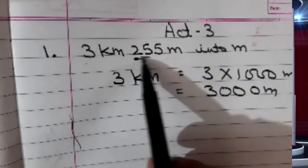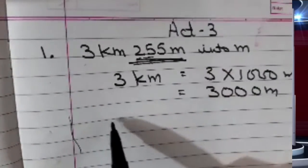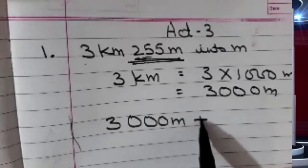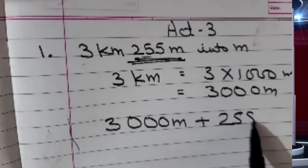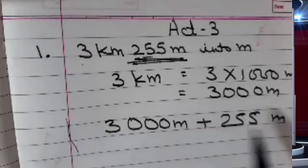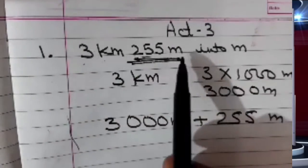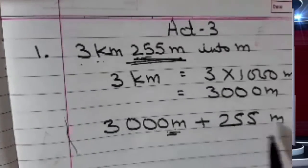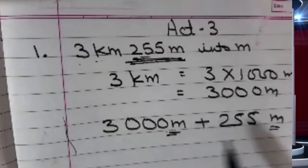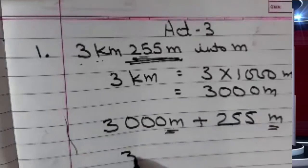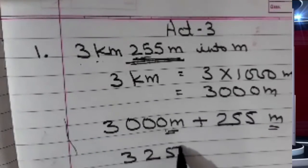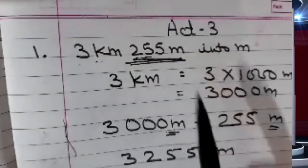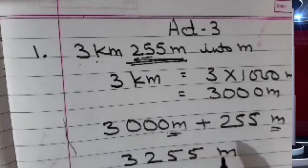Now this 255 is already in meters only. So I will just add 3000 to 255. Now both the units are same, so we can add. Here both units were different so we could not add, but now both have become meters. So I will add both of them. That is 3255 meters. So to convert 3 kilometer 255 meter, the answer is 3255 meters.